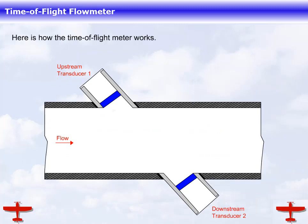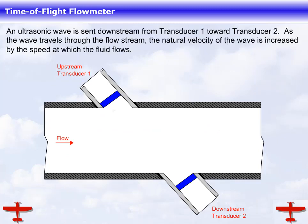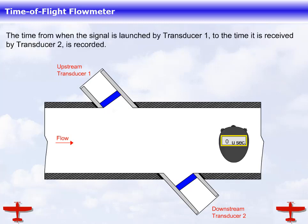Here is how the time-of-flight meter works. An ultrasonic wave is sent downstream from transducer 1 toward transducer 2. As the wave travels through the flow stream, the natural velocity of the wave is increased by the speed at which the fluid flows. The time from when the signal is launched by transducer 1 to the time it is received by transducer 2 is recorded.